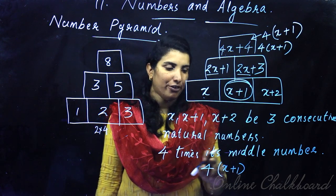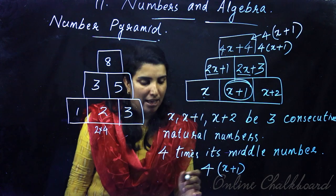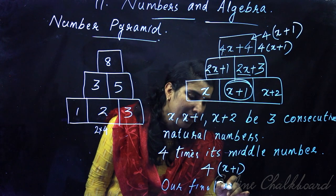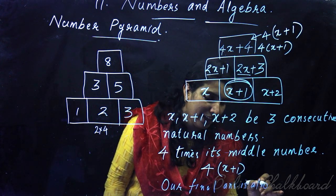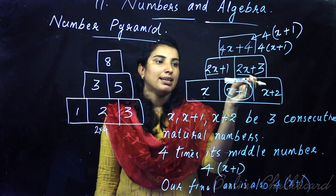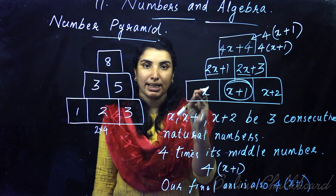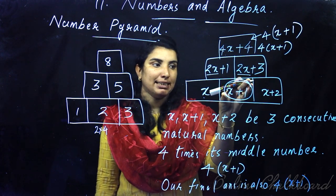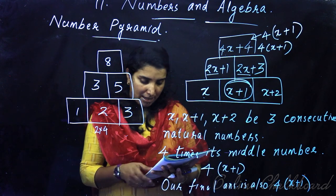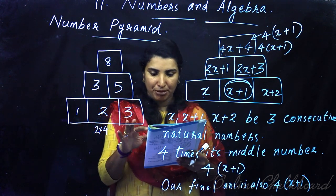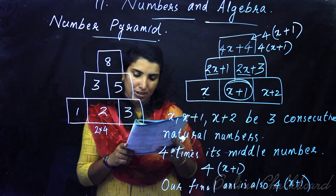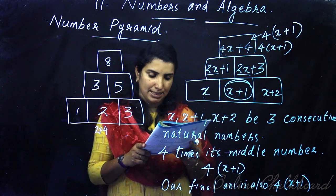That is what I am going to say — this is 4 times the middle number, 4 into x plus 1. Our final answer is also 4 into x plus 1. That is, this is the number of pyramids. The bottom row is the 3 consecutive natural numbers. That is the middle number 4 times, that is the final answer. In the number pyramid, 3 consecutive numbers, we end up with 4 times the middle number.